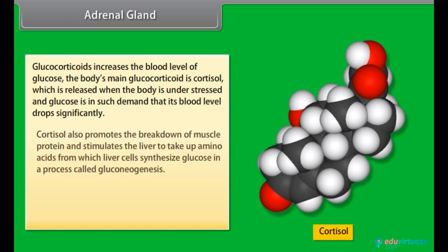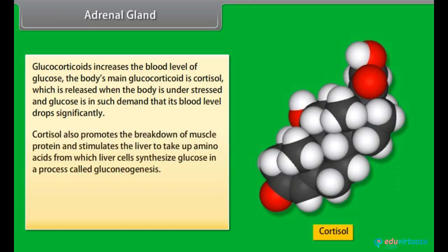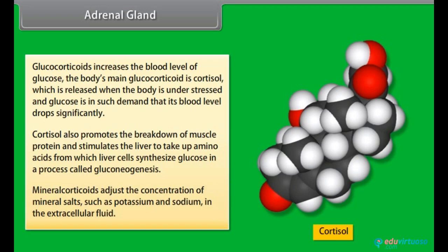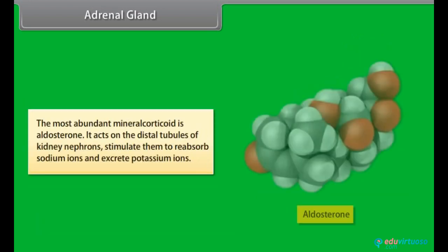Cortisol promotes the breakdown of muscle protein and stimulates the liver to take up amino acids, from which liver cells synthesize glucose in a process called gluconeogenesis. Mineralocorticoids adjust the concentration of mineral salts, such as potassium and sodium, in the extracellular fluid. The most abundant mineralocorticoid is aldosterone, which acts on the distal tubules of kidney nephrons, stimulating them to reabsorb sodium ions and excrete potassium ions.